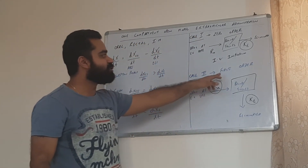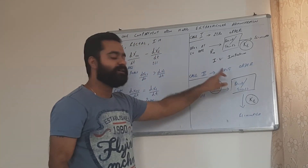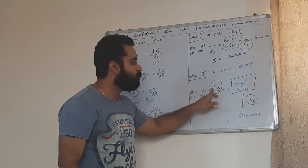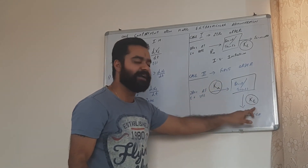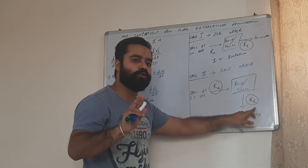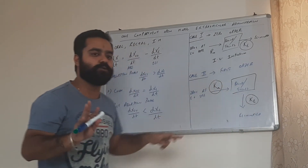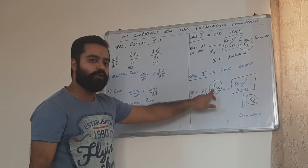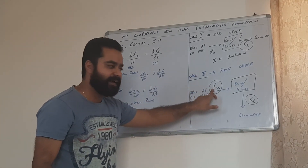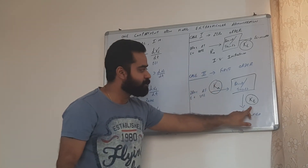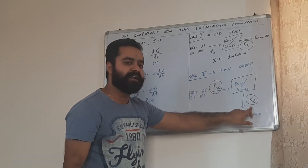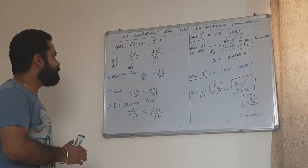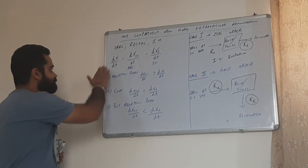If it is first-order, then we have to find out both Ka and Ke. There are two parameters which are going to be important now: absorption rate constant Ka and elimination rate constant Ke. Let us try to see the derivation of this.